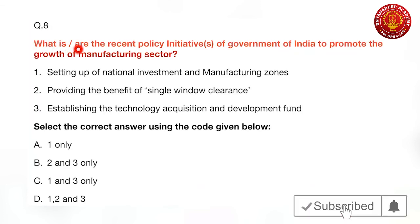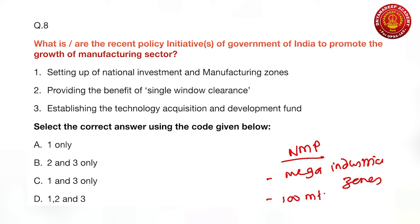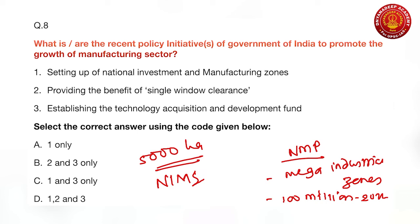The eighth question asks about recent policy initiatives of the Government of India to promote the manufacturing sector, asked in the backdrop of the National Manufacturing Policy (NMP). NMP was announced with the objective of setting up mega industrial zones and creating almost 100 million jobs by 2022. Under this policy, National Investment and Manufacturing Zones (NIMZ) were to be established, with each NIMZ being a greenfield integrated industrial township with modern infrastructure and a minimum land area of 5,000 hectares.